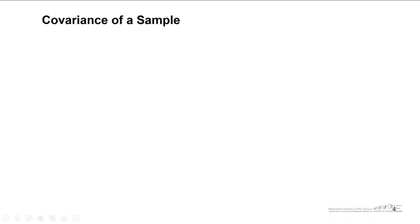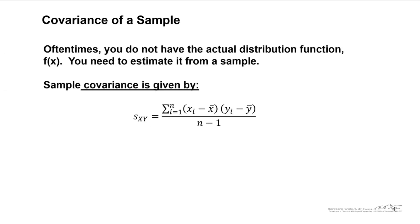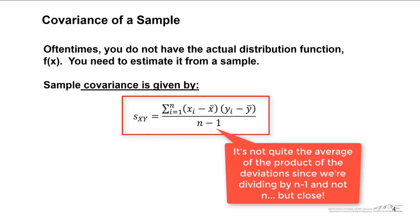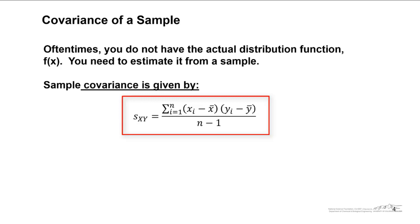Often, you are interested in calculating the covariance of a sample and you don't actually have the distribution function f(x) — you need to estimate it from a sample. Sample covariance is given by this formula: essentially, we're taking the average product of the deviations for each data point, and when we do that, we end up with the sample covariance, s_xy.